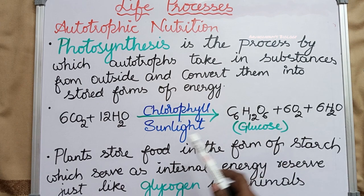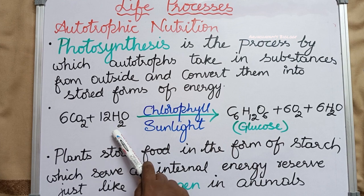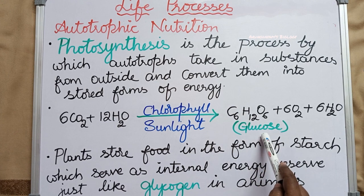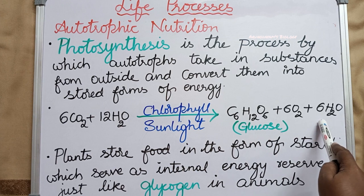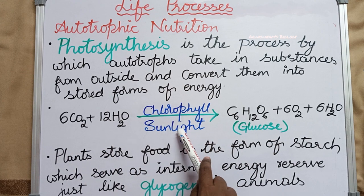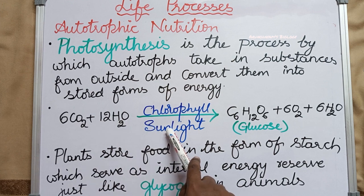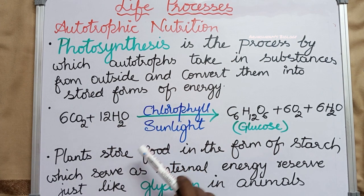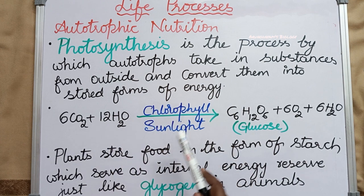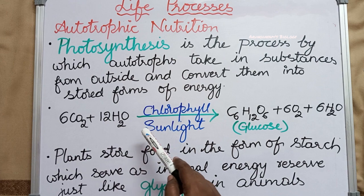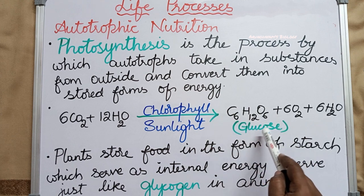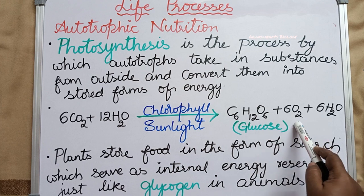The balanced equation of photosynthesis is: 6CO₂ + 12H₂O, in the presence of chlorophyll and sunlight, gives rise to C₆H₁₂O₆ (glucose) + 6O₂ + 6H₂O. The raw materials — carbon dioxide, water, and sunlight — are external factors, while chlorophyll is an internal factor already present in the plant body. These four combine to form glucose as the end product, along with byproducts like oxygen and water.